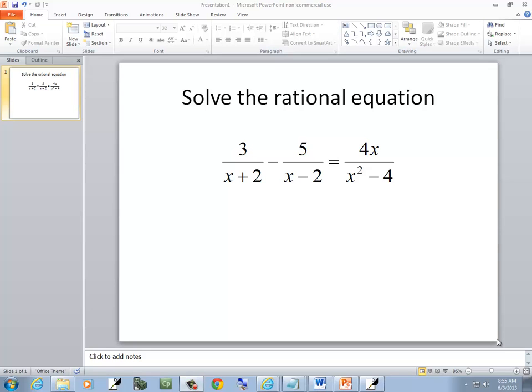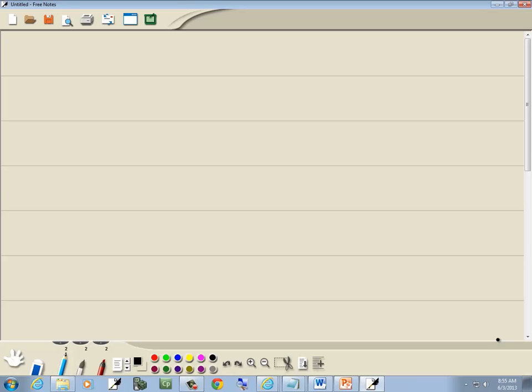Let's take a look at this rational equation. We've got 3 over x plus 2 minus 5 over x minus 2 is equal to 4x over x squared minus 4.